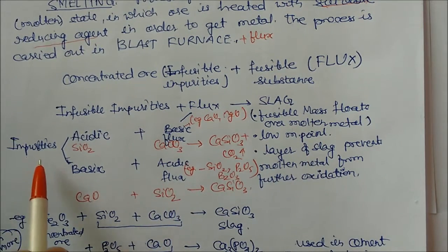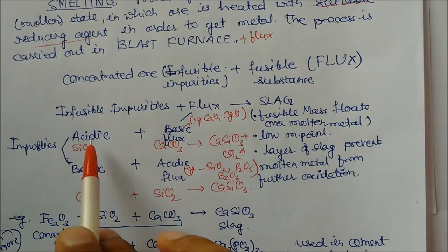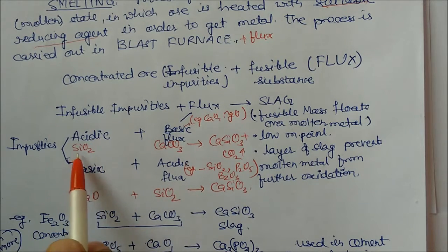We have two types of impurities. One is acidic impurities, one is basic impurities. Acidic impurities means silica oxide. Basic impurities means calcium oxide.